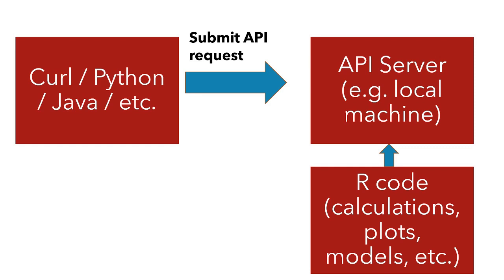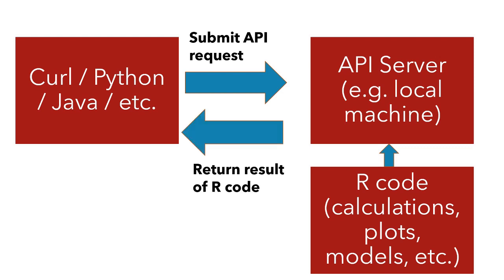And then we'll use another tool like curl or Python to be able to submit a request to our API server. And then when it submits a request to the API server, the API will execute the R code in the background and return the result of the R code back to curl, Python, Java, or whatever other tool that we're using.